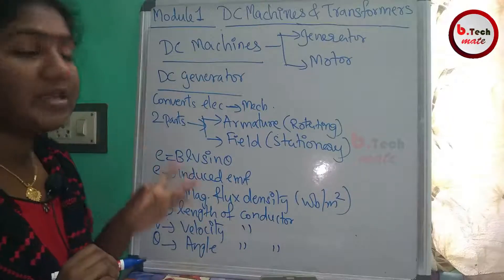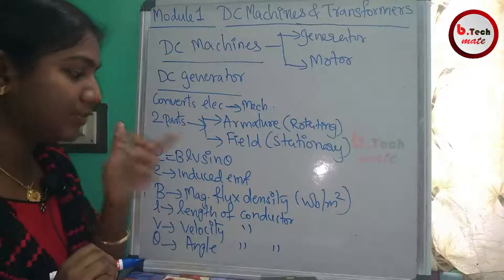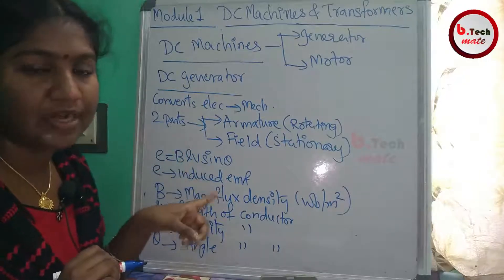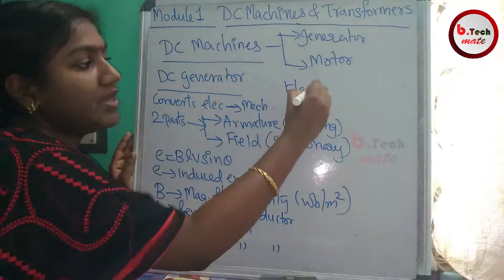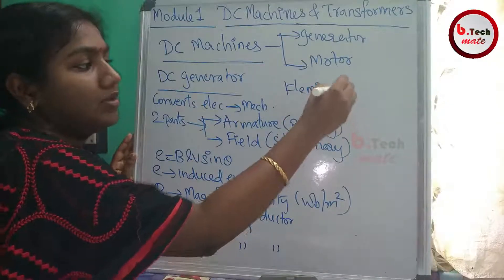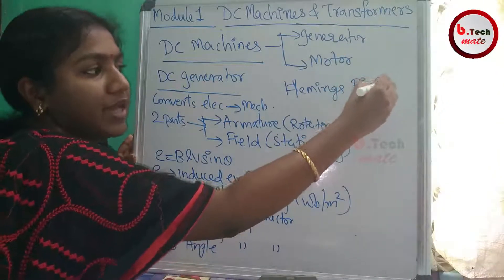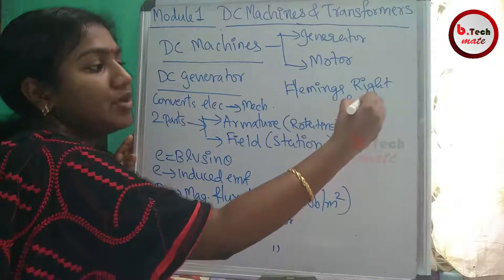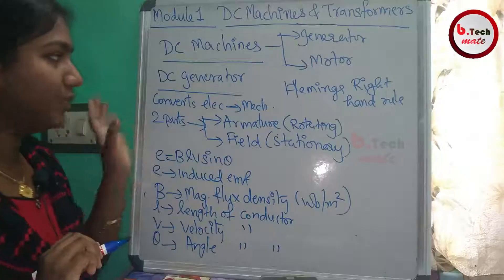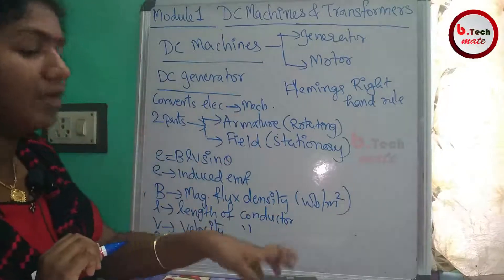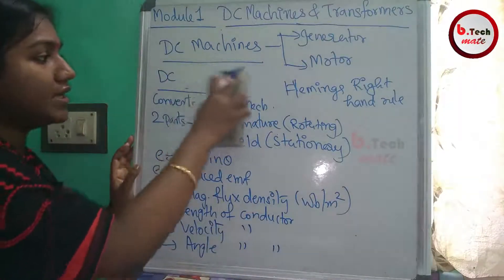This is the dynamically induced EMF equation for the generator. It is mainly based on Faraday's Laws of Electromagnetic Induction. For the direction of induced EMF, we use Fleming's Right Hand Rule for generators and Fleming's Left Hand Rule for motors. This is the basic concept of the DC generator.